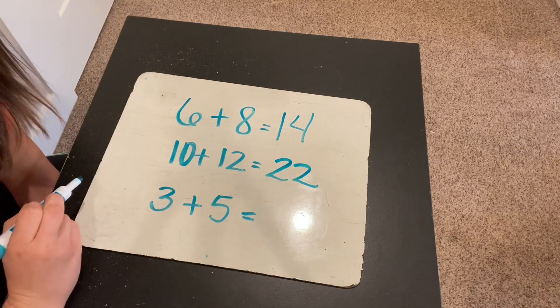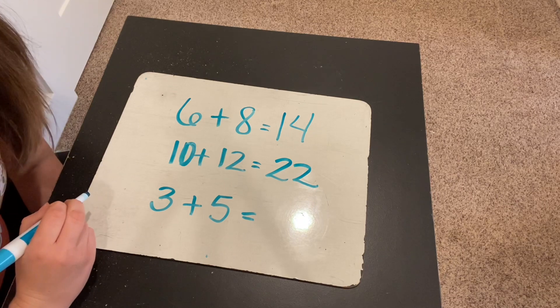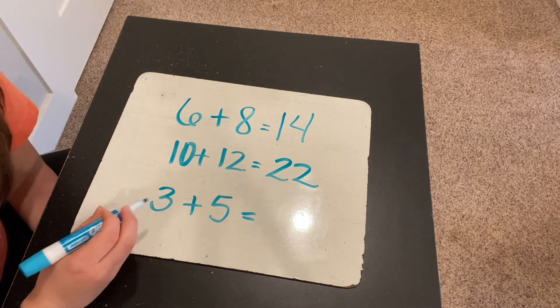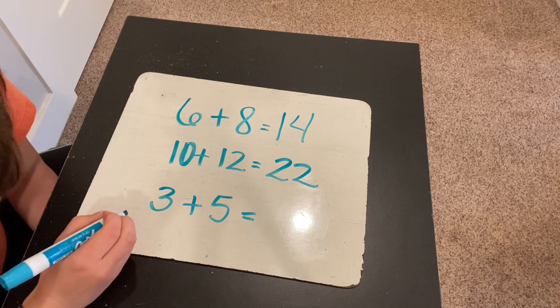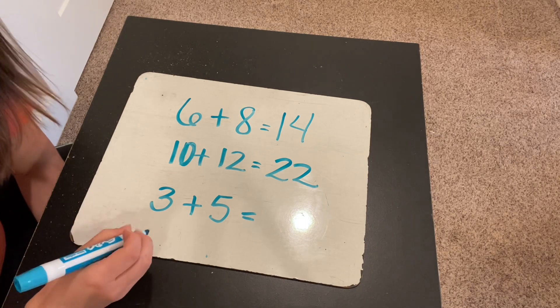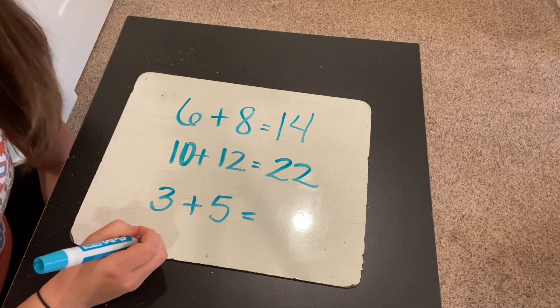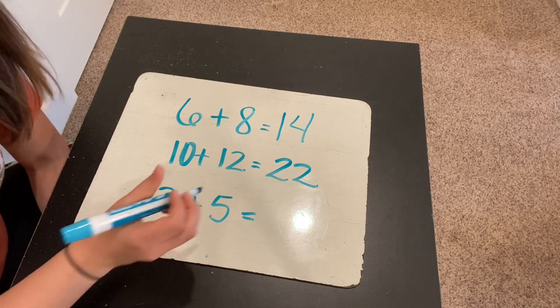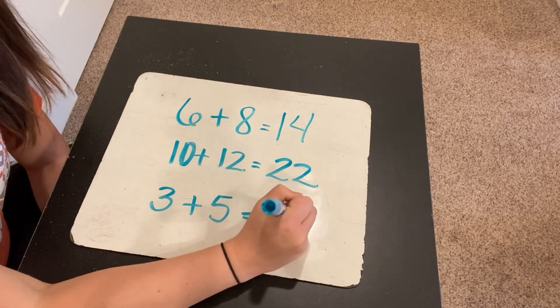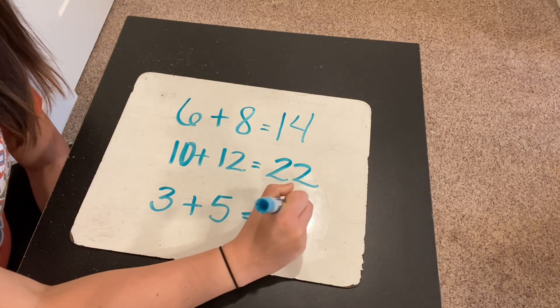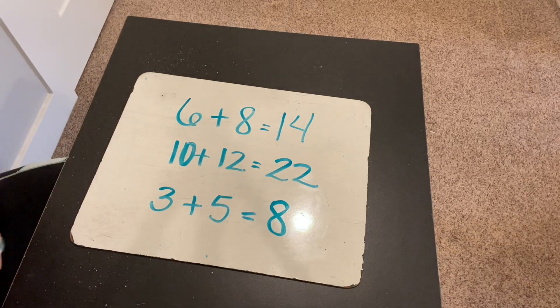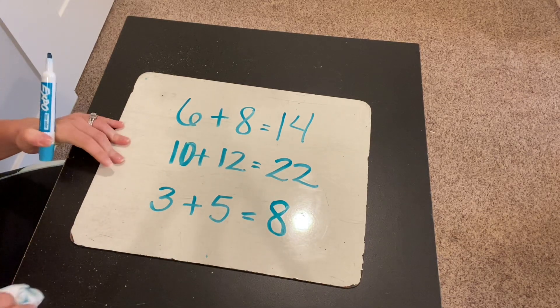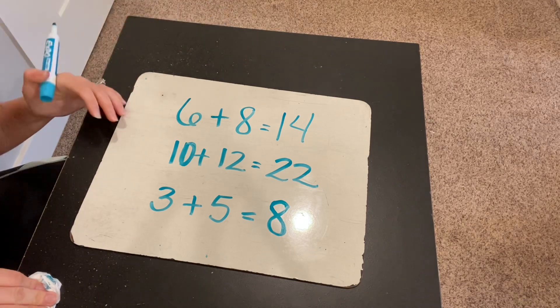Last one, 3 plus 5. What number comes in between 3 and 5 on the number line? The number 4. So what is 4 plus 4? 4 plus 4 is 8. Okay, so that's the between math fact strategy. You just have to find the number in between the two add-ins and double it.